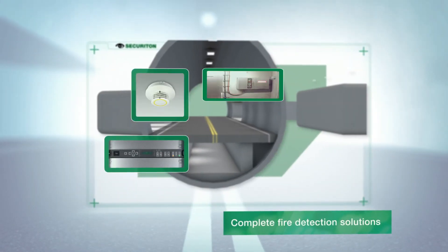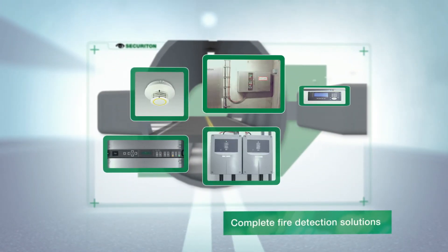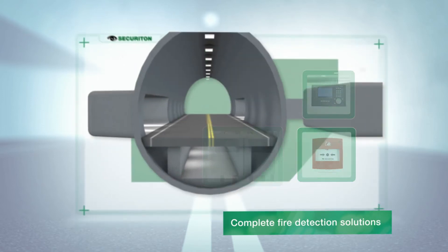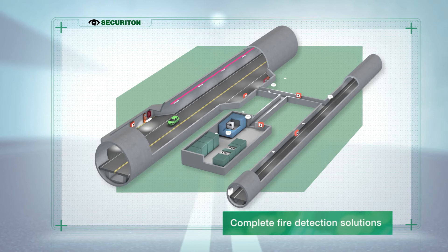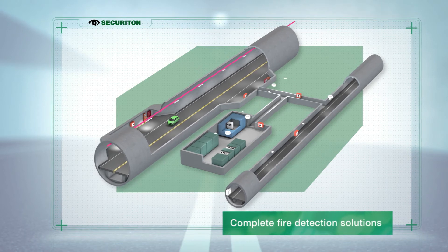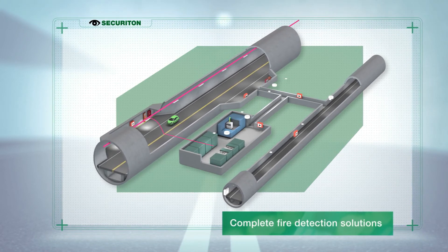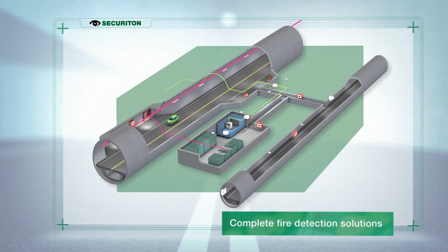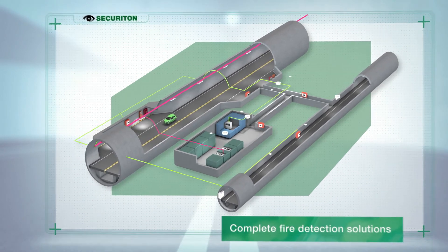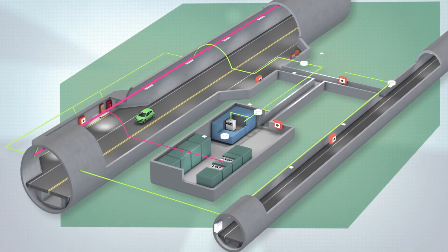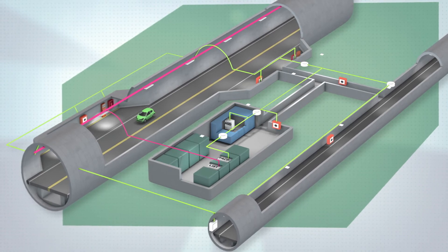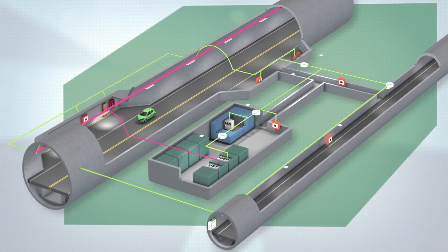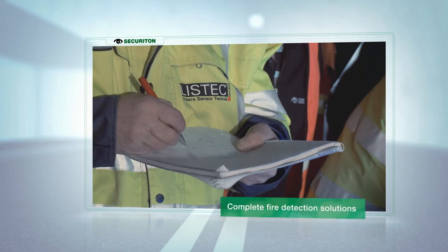However, Securiton doesn't stop there. Manual call points, contacts on fire extinguishers, point-type fire detectors in plants and rescue tunnels, and aspirating smoke detectors for monitoring technical facilities can be combined in a complete monitoring network. The information is collected by the Securifier fire alarm control panel and then forwarded on to the control center and fire brigade panels at the emergency access points.